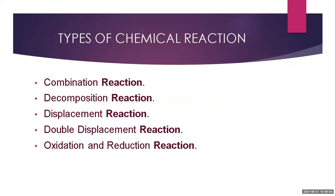There are five kinds of chemical reactions: the combination reaction, the decomposition reaction, the displacement reaction, the double displacement reaction, and the oxidation-reduction reaction — which we can also call the redox reaction, where both oxidation and reduction take place. We will see them one by one.